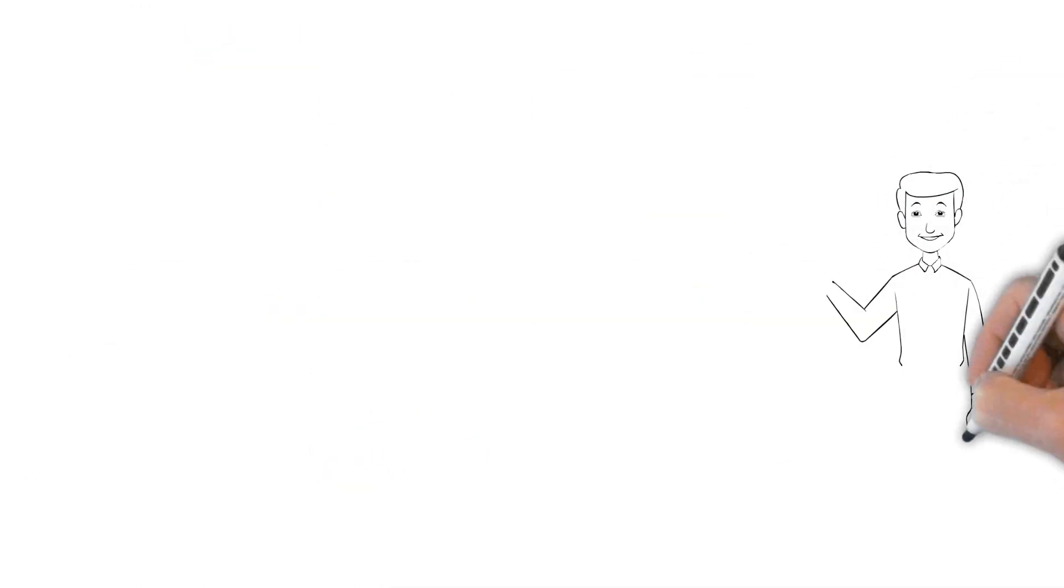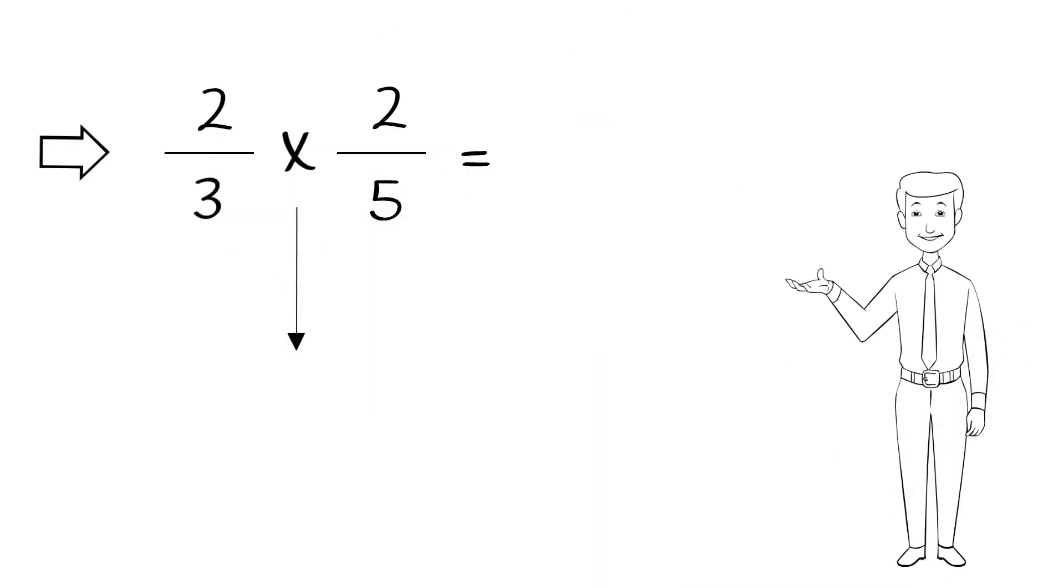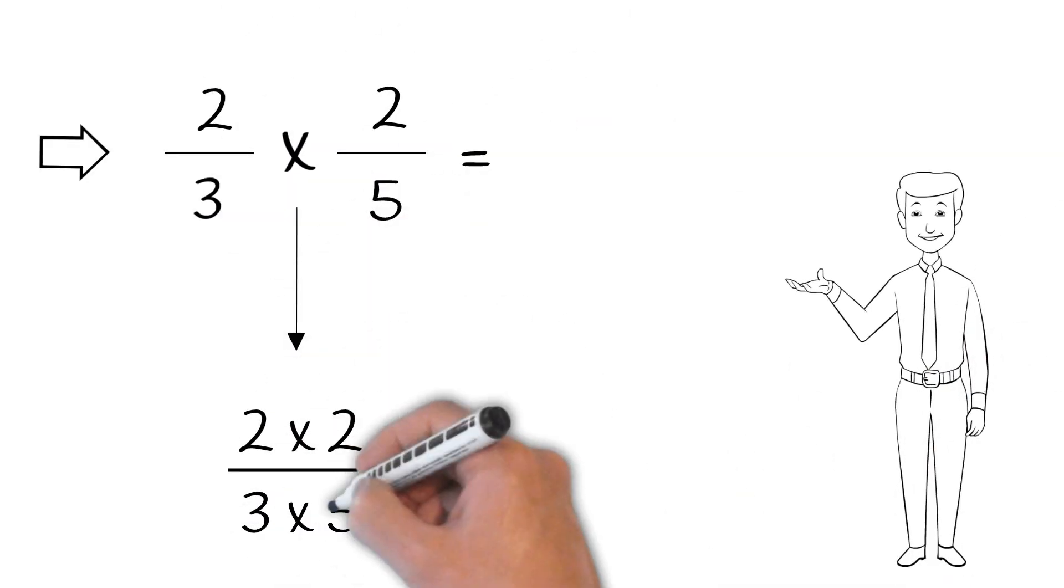As always, let's see some examples. Let's try this problem, 2 thirds times 2 fifths. Now, we could rewrite our problem like we just saw, but that's not necessary as long as we remember the procedure. First, we know our answer is going to be a fraction, so let's go ahead and write a new fraction line for it.